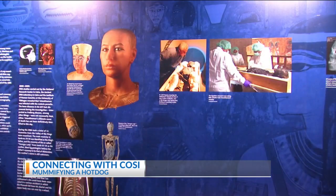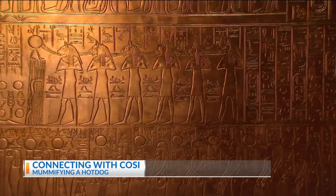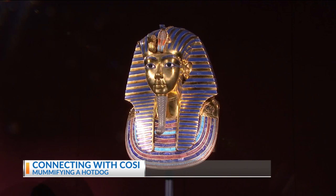A hot dog and a human are not that dissimilar — same kind of moisture content, a lot of protein. The actual mummification process took a little bit longer than a week though. They had 70 days to mummify the pharaoh and place him or her within their tomb in order for them to pass to the afterlife.